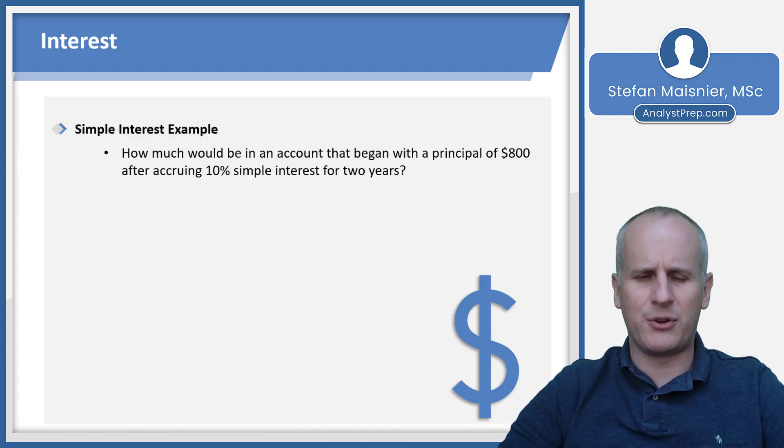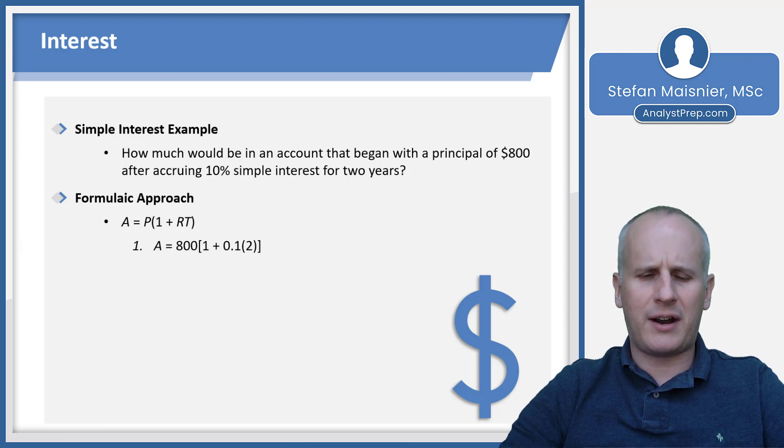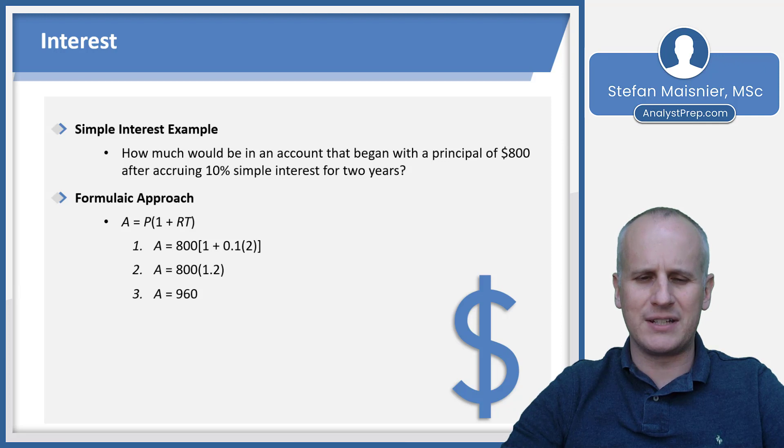Let's take a look at an interest example. How much would be in an account that began with a principle of $800 after accruing 10% simple interest for two years? Our formulaic approach would be A equals P times that quantity 1 plus RT. So our A will be set equal to 800 as the principle times 1 plus 0.1, the 10% as a decimal, times the two years that it accrues. We end up with A equals 800 times 1.2. And if you work that through, you'd get 960 by doing 800 times 1.2, or you could do 80 times 12 if you just move around the decimals.